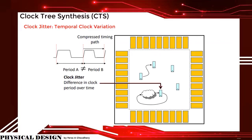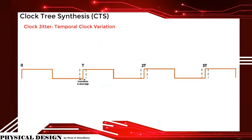Clock jitter is the short-term variation of a signal with respect to its ideal position in time. The two major components of jitter are random jitter and deterministic jitter. Factors causing jitter include imperfection in the clock oscillator, supply voltage variation, temperature variation, and crosstalk.